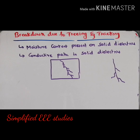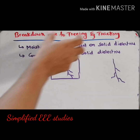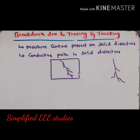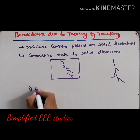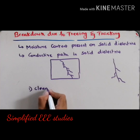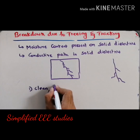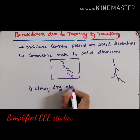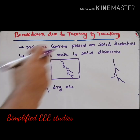How to overcome this phenomenon? How to get rid of treeing and tracking? There are several methods. The first method is to clean the solid dielectric material frequently — provide cleanliness. The second method is to keep the solid dielectric material dry. These are the basic precautions you can take to protect the solid dielectric material against treeing and tracking.